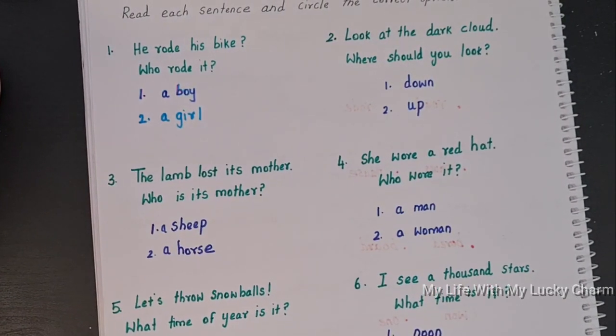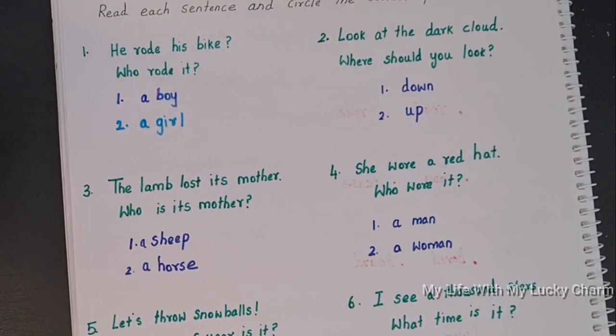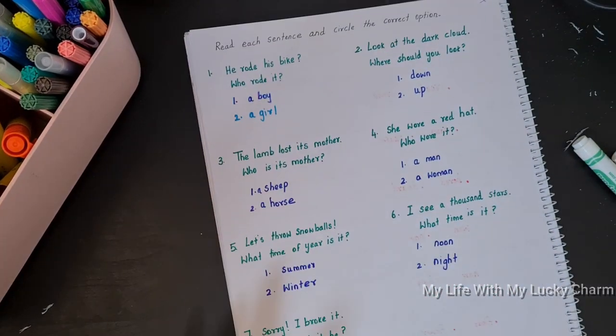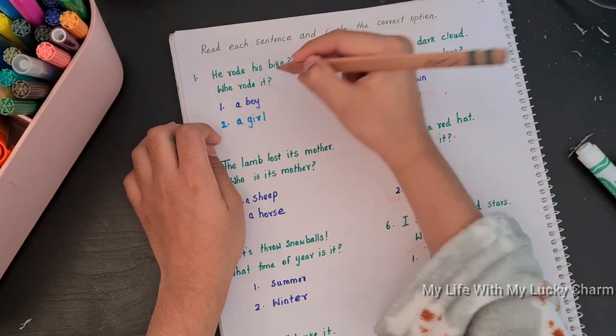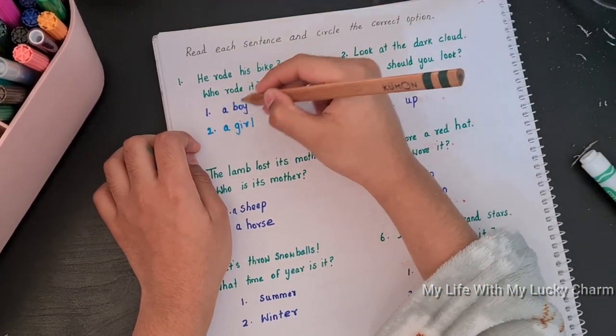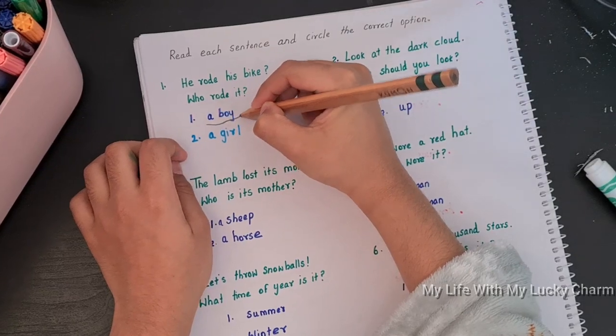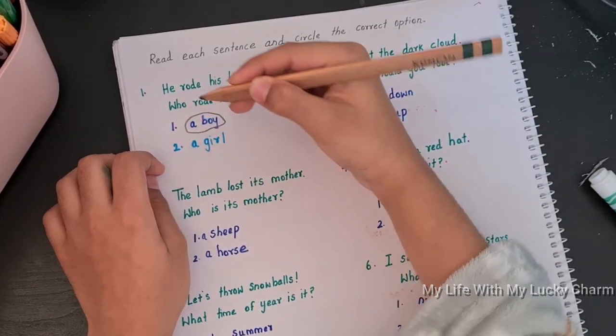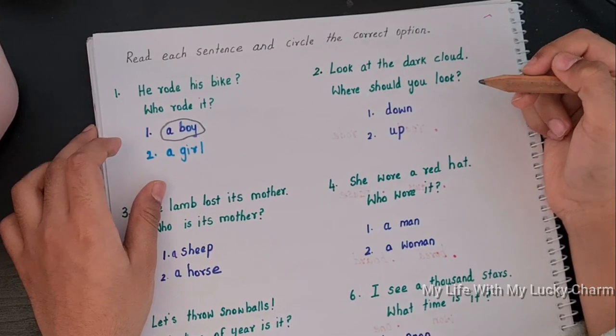So I thought like the basics like these activities will really help them to understand what the sentence is and how we need to relate it with the options. So are you ready? Yes. He rode his bike. Who rode it? A boy, because it shows he. Look at the dark cloud.